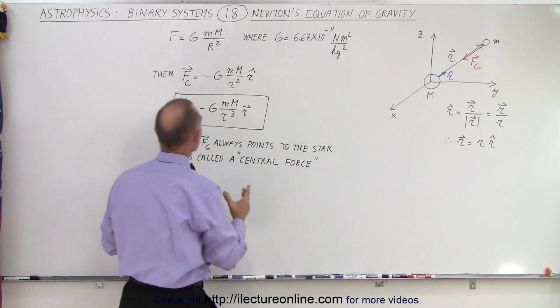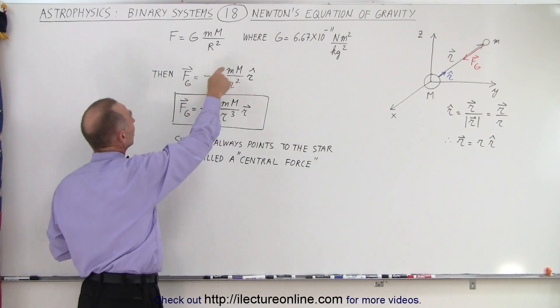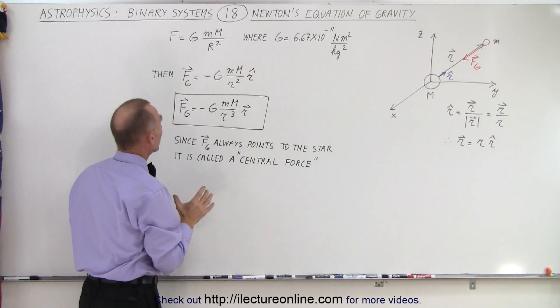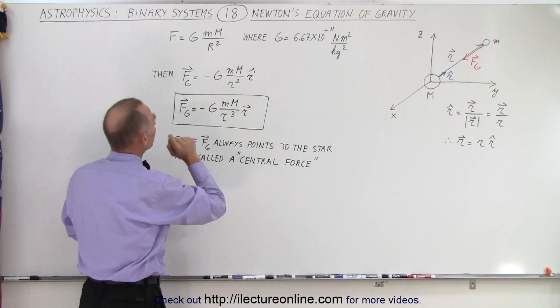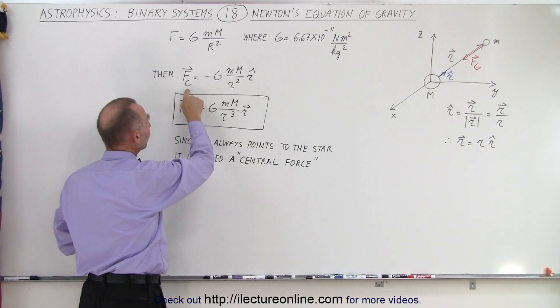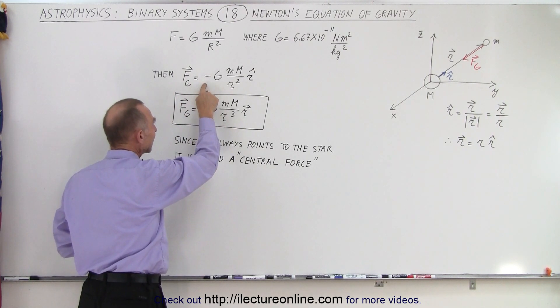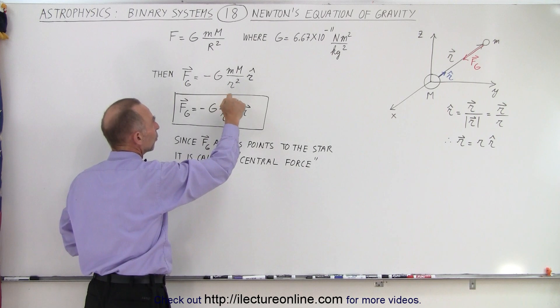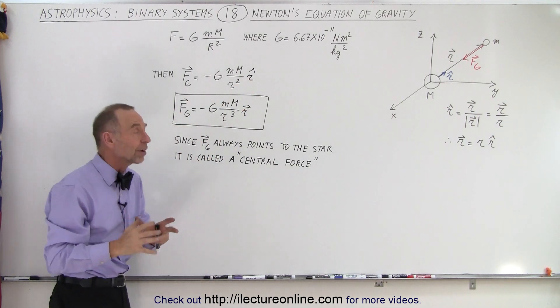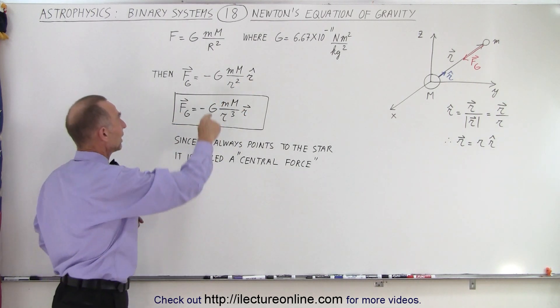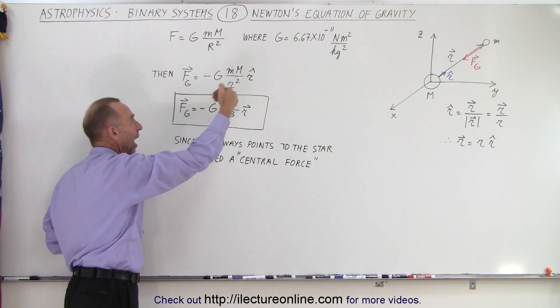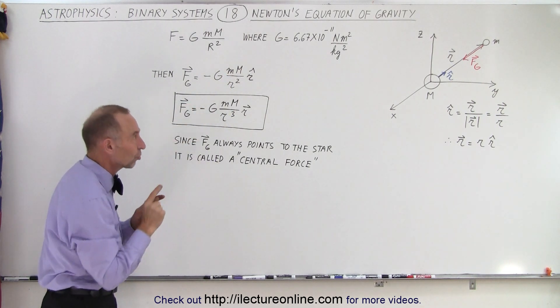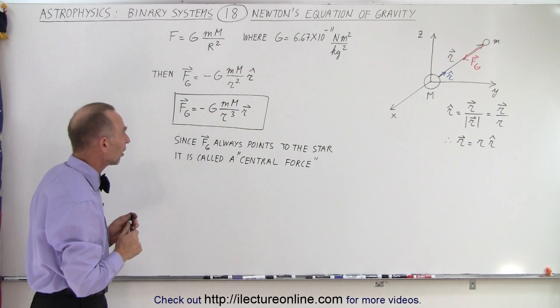...then if we go over here and we write the universal gravitational equation as a vector quantity, notice we now have the force as a vector is equal to negative G*m*M over R squared times the unit vector R. Notice the negative sign simply indicates that it's in the opposite direction. It's towards the star instead of away from the star.